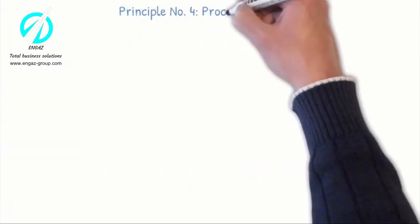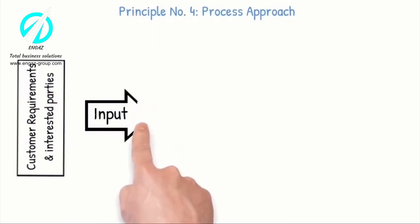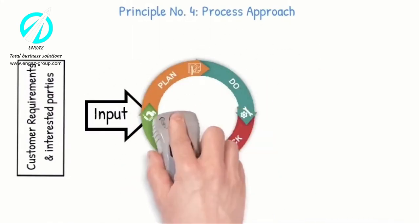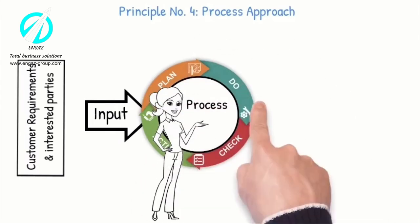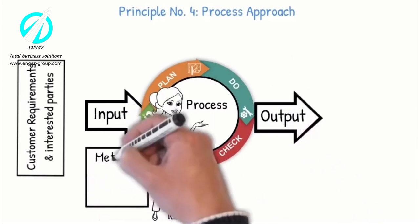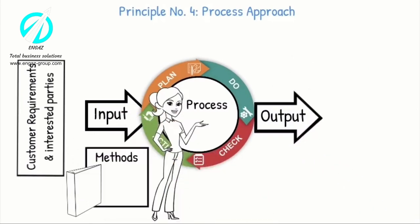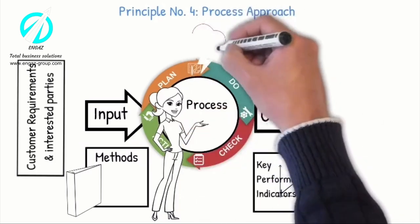Principle number four: Process Approach. ISO 9001 employs the process approach, starting with identifying the customer requirements and incorporating the Plan-Do-Check-Act (PDCA) cycle, which enables an organization to plan its processes and their interactions. Understanding how results are produced by this interrelated system of processes enables an organization to optimize the system and its performance.